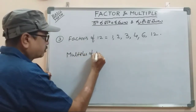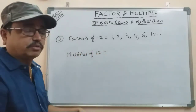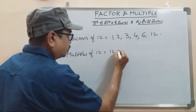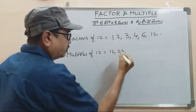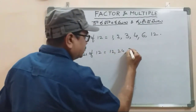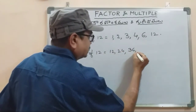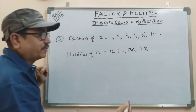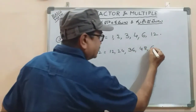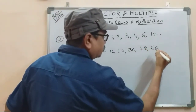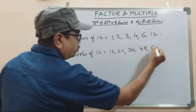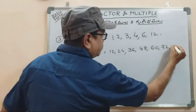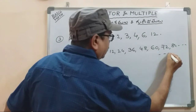Multiples of 12: 12 times 1 is 12, 12 times 2 is 24, 12 times 3 is 36, 12 times 4 is 48, 12 times 5 is 60, 12 times 6 is 72, 12 times 7 is 84, and so on.